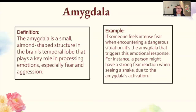Amygdala. The amygdala is a small almond-shaped structure in the brain's temporal lobe that plays a key role in processing emotions, especially fear and aggression. So if someone feels intense fear when encountering a dangerous situation, it's the amygdala that triggers that emotional response. For instance, a person might have a strong fear reaction when seeing a snake due to the amygdala's activation.